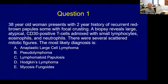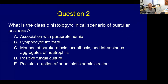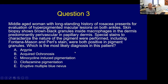Quick review questions: A 38-year-old woman with a 2-year history of recurrent red-brown papules — biopsy reveals large atypical CD30-positive T cells — most likely diagnosis is lymphomatoid papulosis. Classic histology of pustular psoriasis: mounds of parakeratosis, acanthosis, and intraspinous neutrophils. A middle-aged woman with rosacea and hyperpigmented macular lesions on both ankles showing brownish-black granules — this is minocycline hyperpigmentation. A 10-year-old with lifelong linear yellow-brown warty papules with papillomatosis, elongation of rete ridges, focal vacuolar alterations in the spinous cell layer — this is epidermolytic hyperkeratosis, a reaction pattern seen in epidermal nevus.